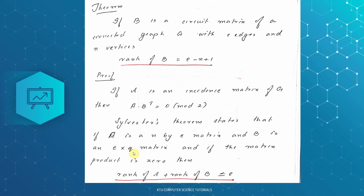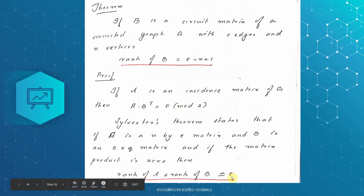An N by E matrix multiplied by an E by Q matrix gives a result of dimension N by Q. So E and N will give a result of dimension N by Q, and that N by Q matrix will be N by Q. By Sylvester's theorem, rank of A plus rank of B will be less than or equal to E.